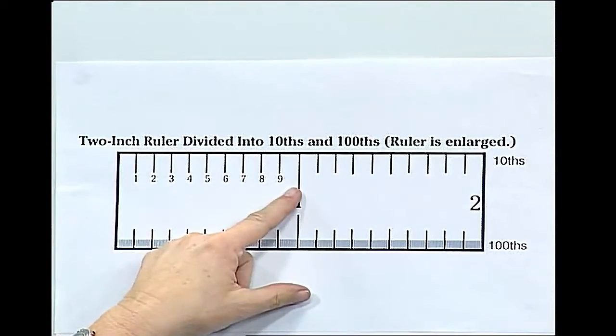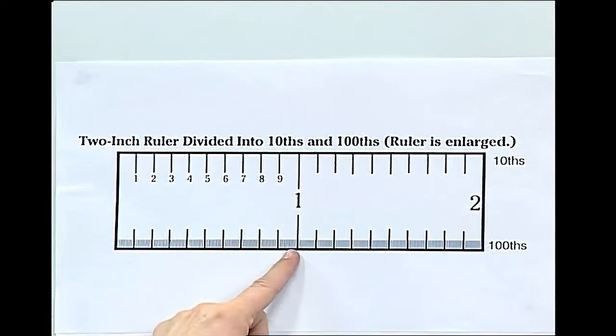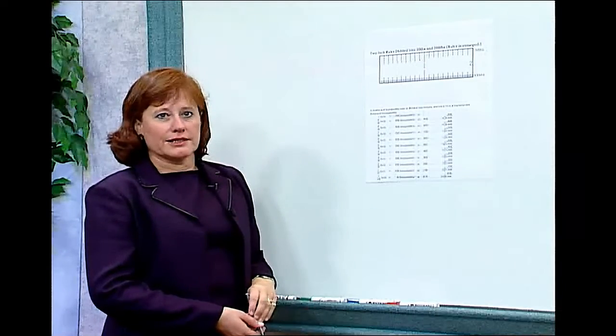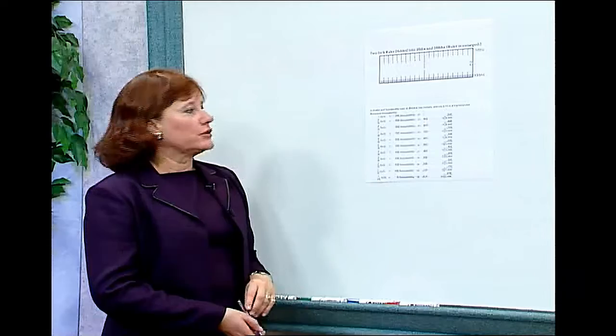You'll notice on the top there are ten tenths and in the bottom line there are one hundred hundredths. These lines are spaced very closely together. Machinists and tool makers find a ruler divided in this manner is a little bit easier to use.